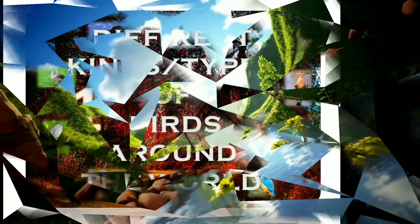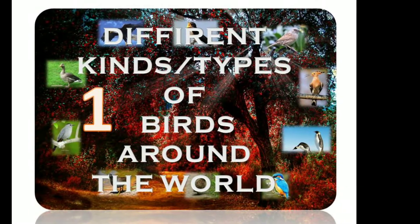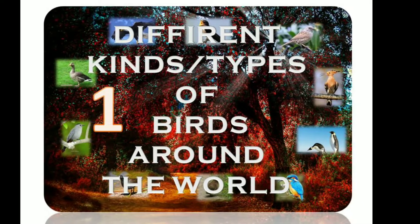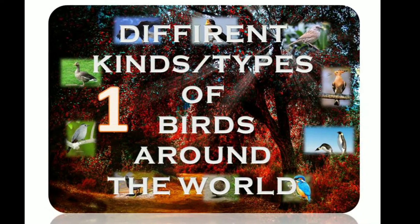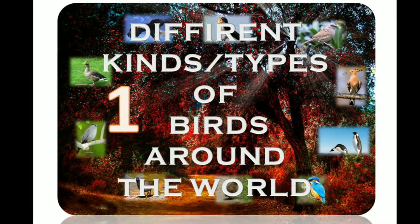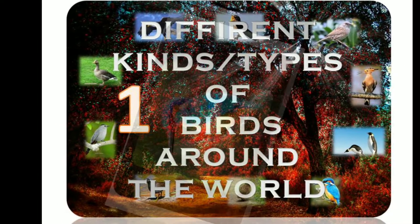Birds are warm-blooded, egg-laying vertebrates distinguished by the possession of feathers, wings, and a beak, and typically by being able to fly. Different types of birds.